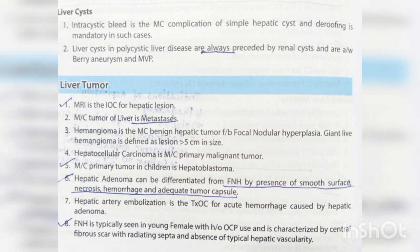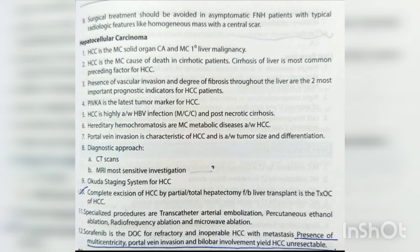Liver tumors: MRI is the investigation of choice for hepatic lesions. The most common tumor of the liver is metastasis. Hemangioma is the most common benign hepatic tumor, followed by focal nodular hyperplasia (FNH). Giant liver hemangioma is defined as a lesion greater than 5 cm. The most common primary malignant tumor is hepatocellular carcinoma; the most common primary tumor in children is hepatoblastoma. Hepatic adenoma can be differentiated from FNH by the presence of smooth surface, necrosis, hemorrhage, and a tumor capsule. Hepatic artery embolization is the treatment of choice for acute hemorrhage from hepatic adenoma. FNH is typically seen in young females with history of OCP use, characterized by central fibrous scar with radiating septa. Surgical treatment should be avoided in asymptomatic FNH patients with typical radiological features.